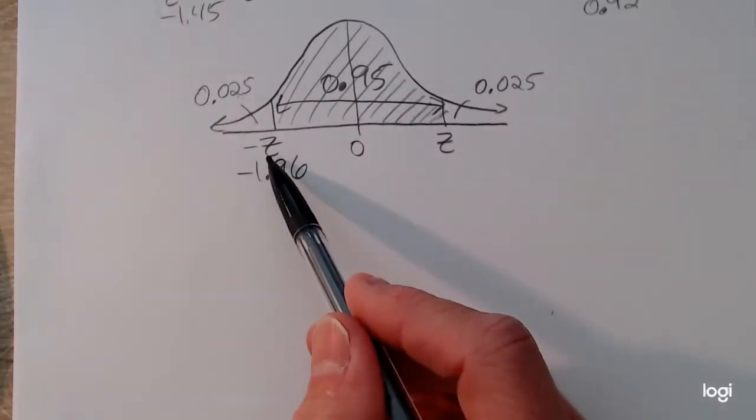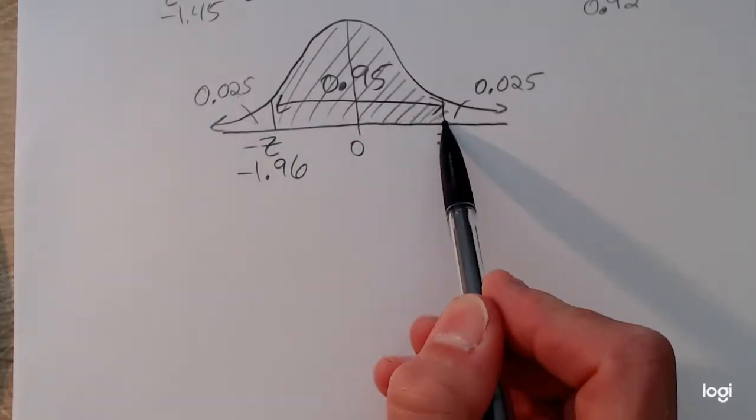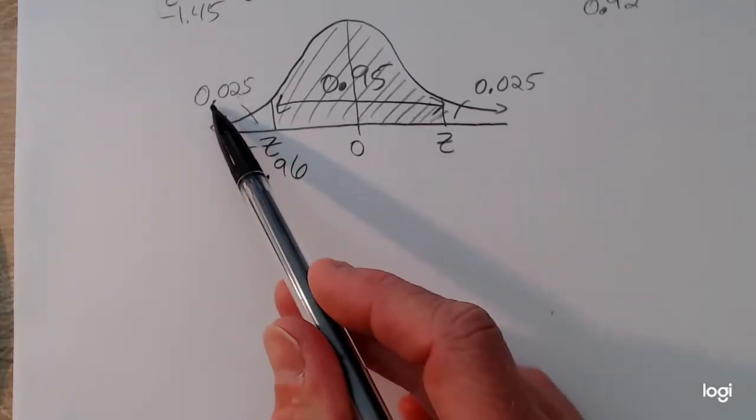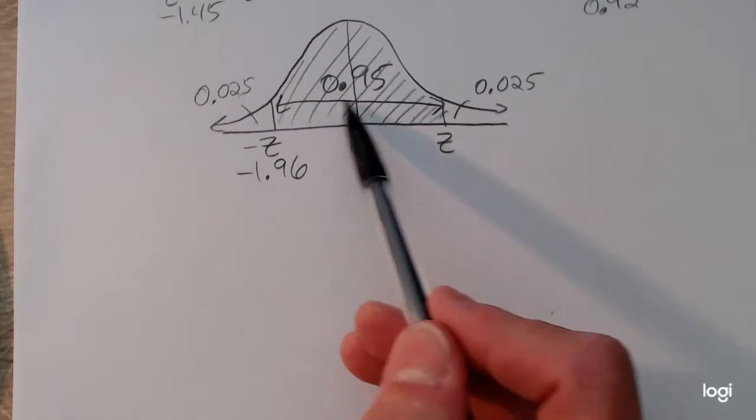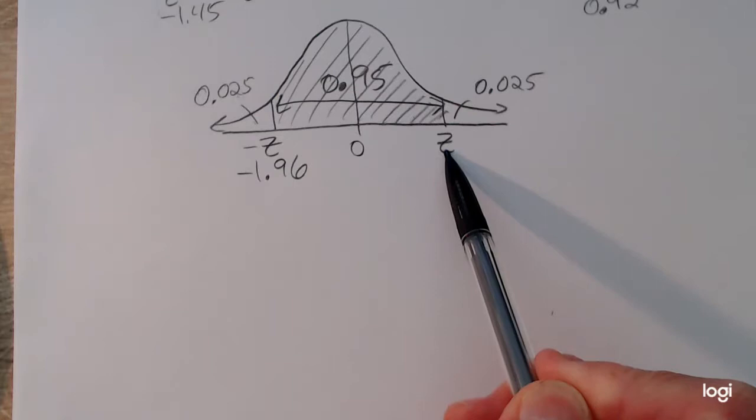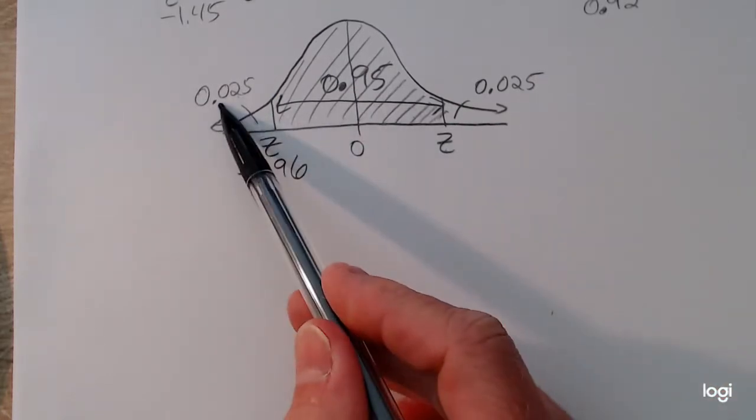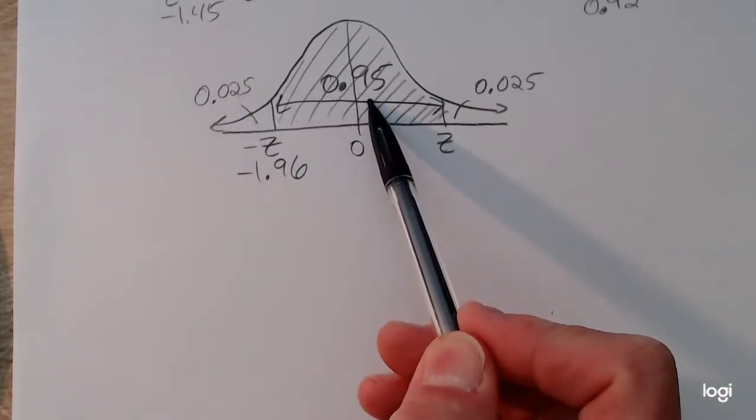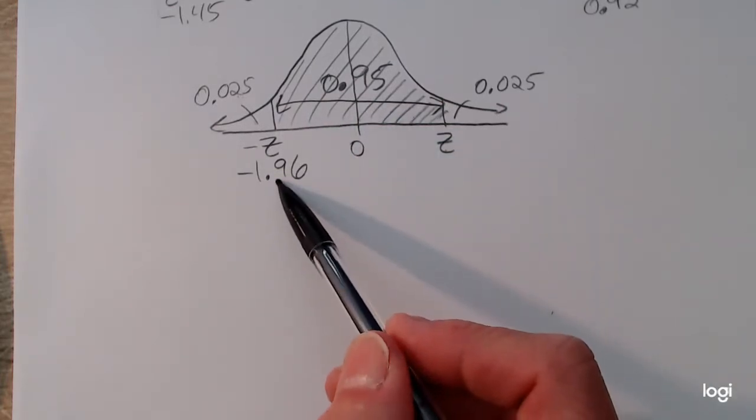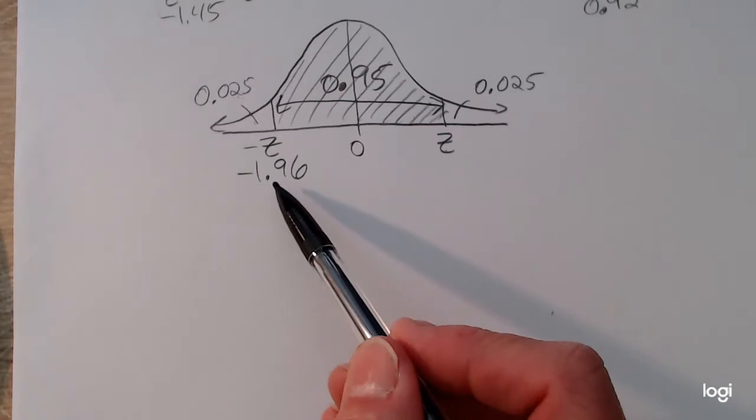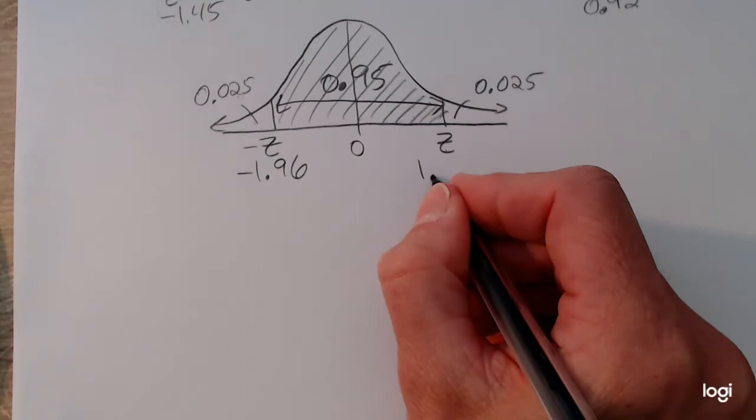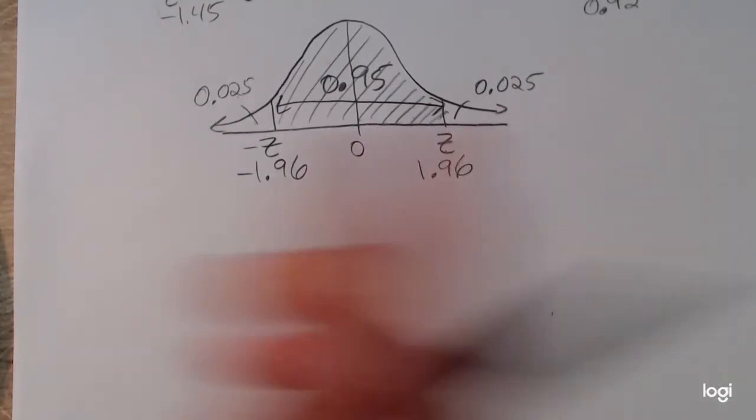So I don't have to use the table to find the upper z-score. If I wanted to do that, I would have to recognize the fact that there's a cumulative area of 0.975 below this positive z-score. That's 0.025 plus this 0.95. So I could do that. However, I can use the fact that this distribution is symmetric. So if this z-score is negative 1.96, the upper z-score will be positive 1.96.